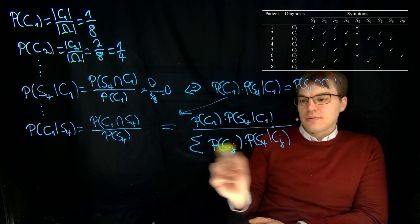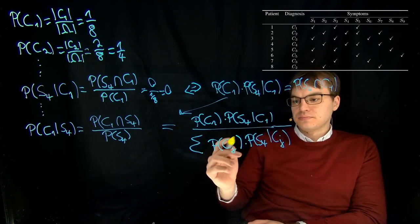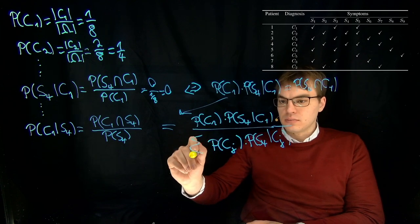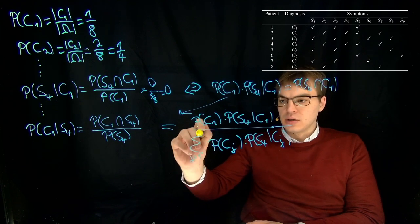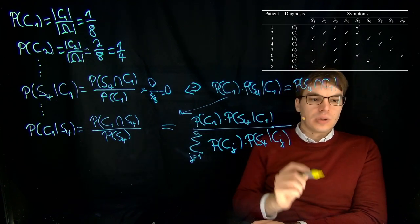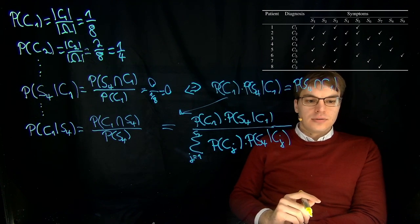So this is the formula of total probability for j equals 1 to 5 because we have all five different diagnoses here.